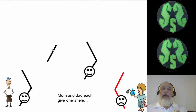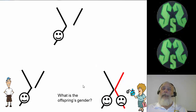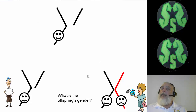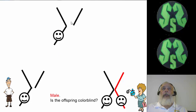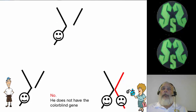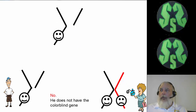Here's where it gets more interesting. If dad gives the Y chromosome and mom gives the X chromosome without colorblindness, what is the gender of this offspring? Hopefully you said boy — one X chromosome, one Y chromosome. Is it going to be colorblind? There's no genotype at all for color blindness, so this is going to be a normal-sighted boy.